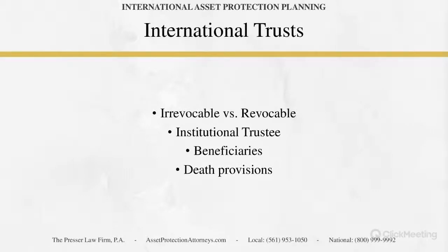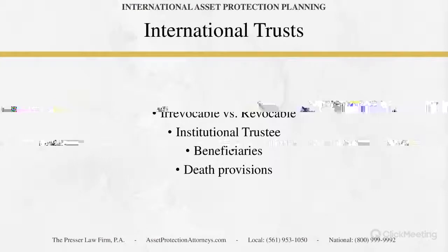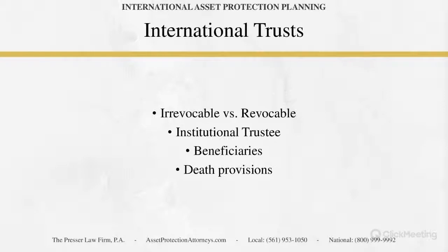The trust is considered what we call a self-settled spendthrift trust, meaning the settlor sets it up for their own benefit, and there are provisions throughout the trust document — usually somewhere between 70 and 100 pages — that give the trustee discretion as to whether or not to make distributions. It's a discretionary spendthrift self-settled trust, and that's where your protections lie.